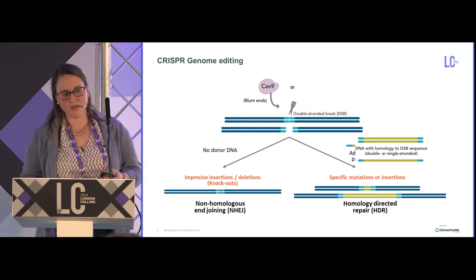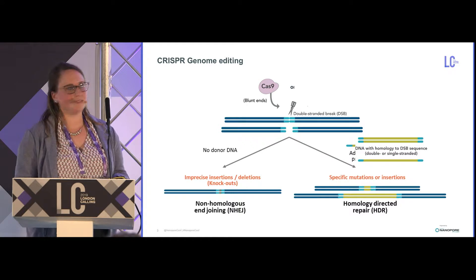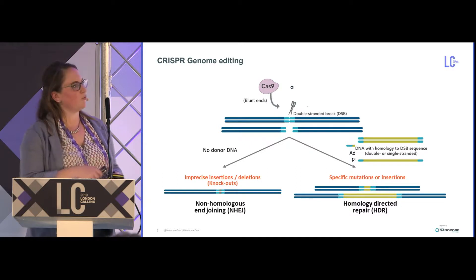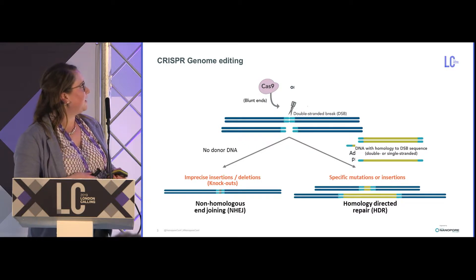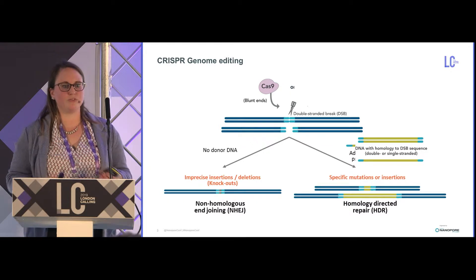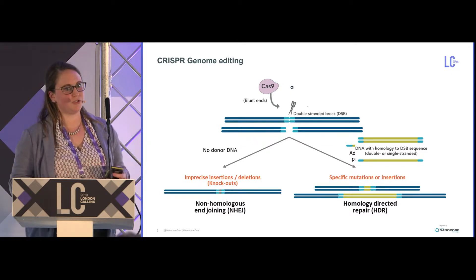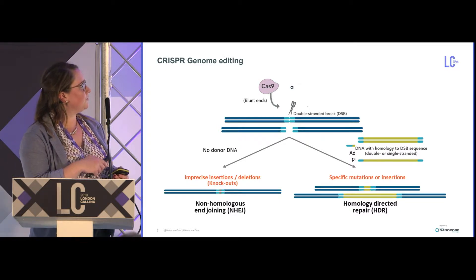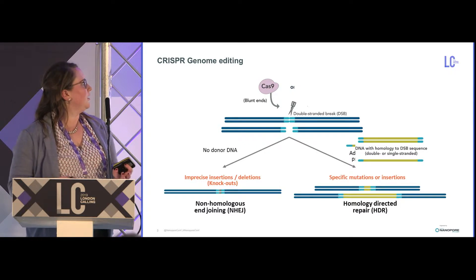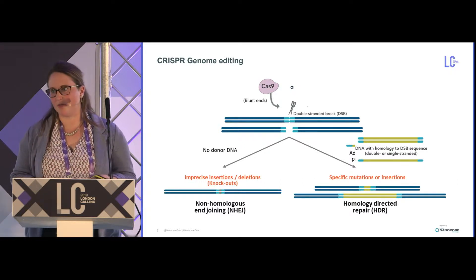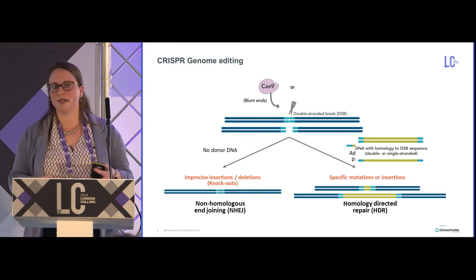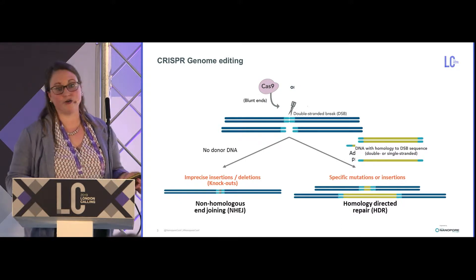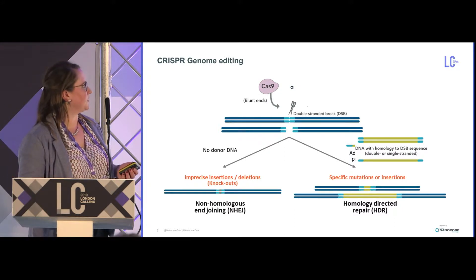We deliver this Cas9 ribonucleoprotein complex to cells, and it generates a double-stranded break in the genomic DNA. This break can then be repaired by one of two main pathways. If you have no donor DNA, you get the non-homologous end-joining pathway on the left — an error-prone repair pathway that generates insertions or deletions at the double-stranded break, making it a great way to knock out a gene of interest by disrupting protein function.